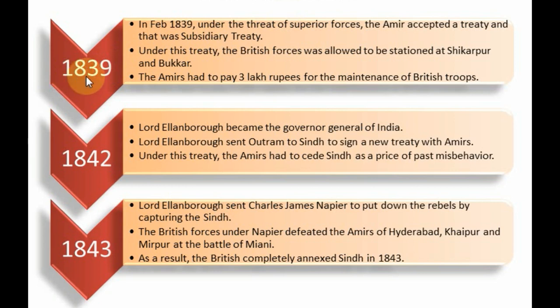In 1839, due to the threat of superior forces against the British, the Amirs of Sindh had to sign another treaty with the British — the Subsidiary Treaty. According to this treaty, British forces were allowed in Sindh at two locations: Sukkur and Bukkar. In addition, the Amirs of Sindh had to pay three lakh rupees for the maintenance of British troops.